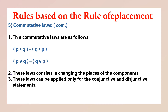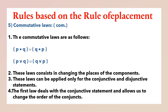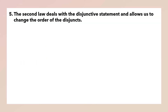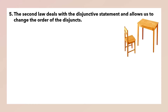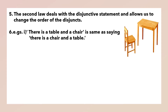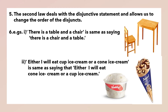So we are interchanging the conjuncts and disjuncts. The first law deals with the conjunctive statement and allows us to change the order of the conjuncts. The second law deals with the disjunctive statement and allows us to change the order of the disjuncts. For example: 'There is a table and a chair' is the same as saying 'there is a chair and a table.' Similarly, 'Either I will eat cup ice cream or a cone ice cream' is the same as saying 'either I will eat cone ice cream or a cup ice cream.'